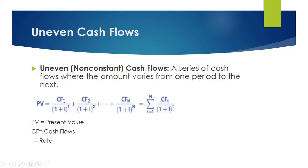divided equal to CF1 divided by 1 plus r or i to the power 1, CF2 divided by 1 plus i to the power 2. Here CF indicates the cash flows, PV indicates present value, i indicates rate of return or discount rate.